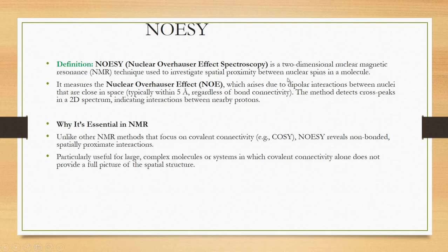It measures the interaction between two nuclei which are in close proximity in space. This interaction occurs through space, typically within five angstroms, regardless of bond connectivity. When you see these interactions, there will be cross peak formation in the spectrum which indicates the interactions between nearby protons.